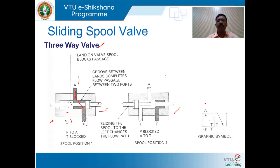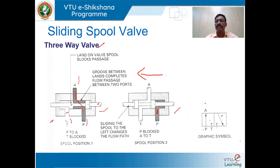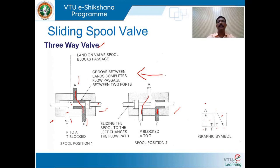When the spool slides within the valve body and moves to the second position — denoted by another adjacent square — P is blocked with no connectivity between P and A, and A is connected to T. There are two switching positions, and port opening and closing occurs as the spool slides within the valve body.